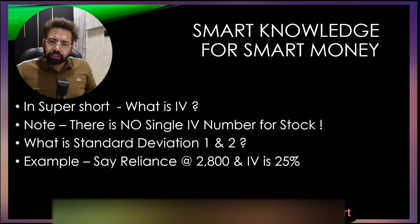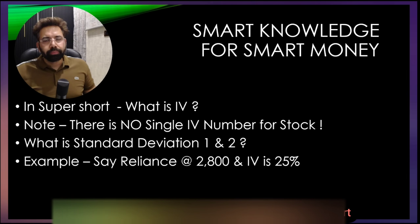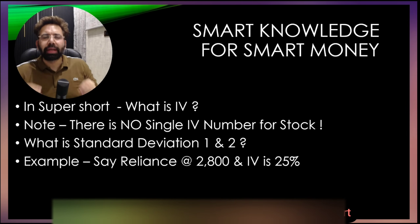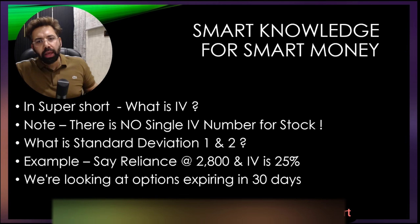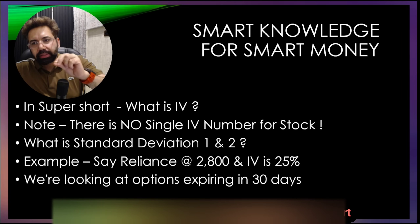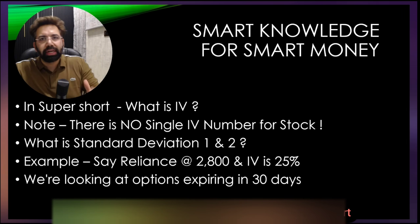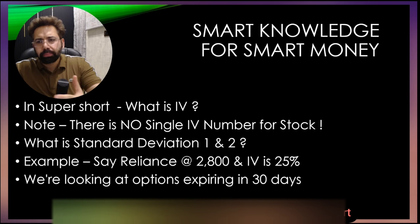Let's say Reliance is trading at 2800 with an IV of 25%. We are looking at an option expiry of 30 days because IV calculates the annual move. When trading Reliance, we want to trade monthly options — probably 30 DTE. The same concepts work absolutely fine for US markets. We don't want the annual range; we want the monthly range.